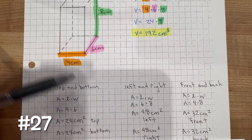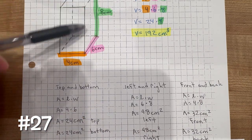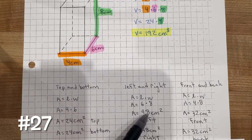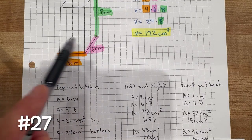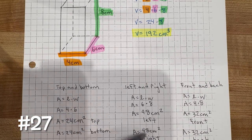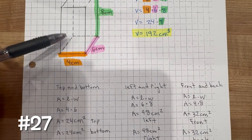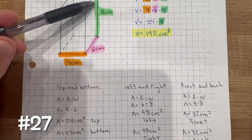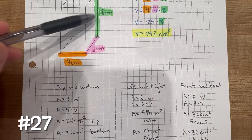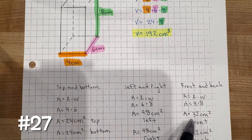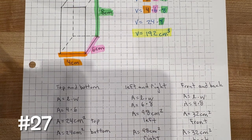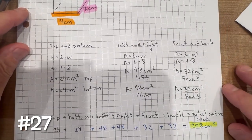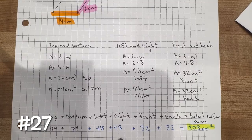For the left and right faces: 6 multiplied by 8 is 48 square centimeters each — so two 48s. For the front and back: opposite sides of a rectangle are congruent, so if the height is 8, the other side is also 8. So 4 times 8 is 32 square centimeters each. Adding all the faces together gives a total surface area of 208 square centimeters — not cubic, because it's area of the faces, not volume.